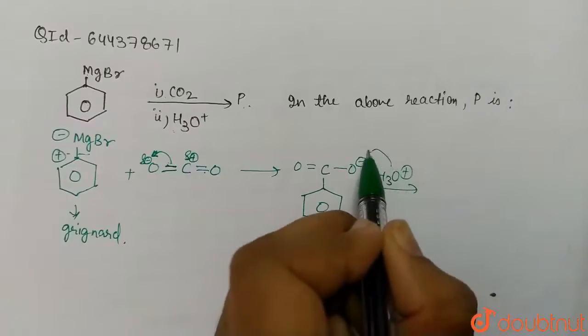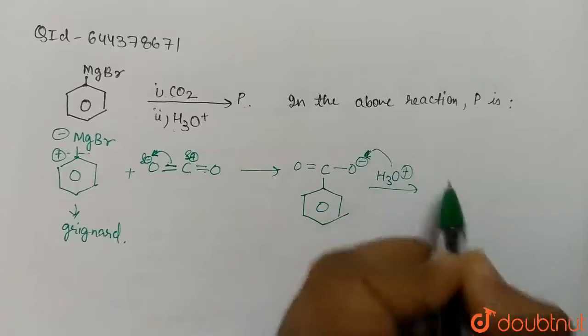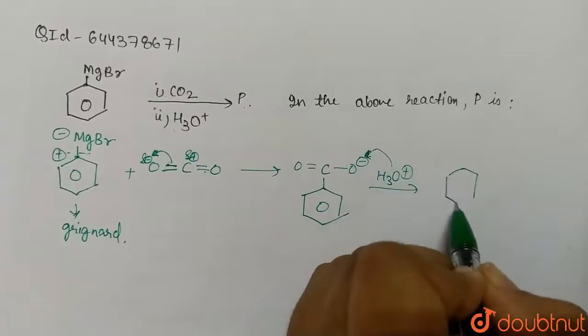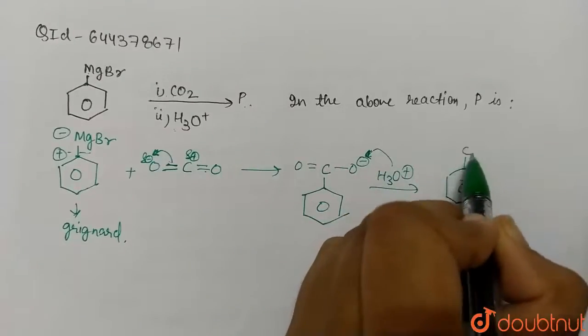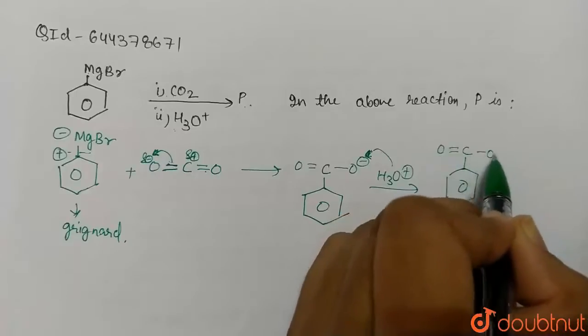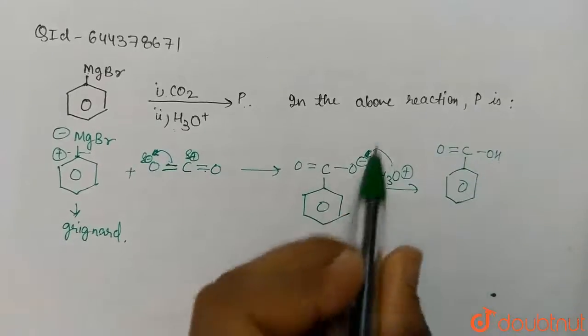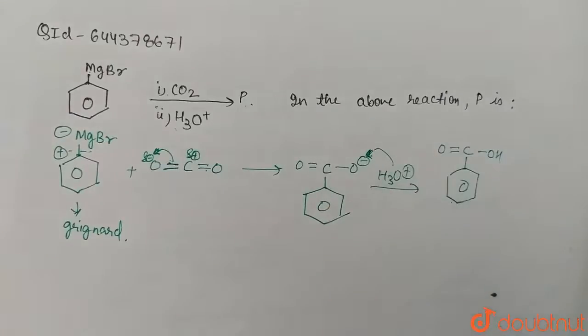Here we get double bond O and OH, which is benzoic acid. So P is benzoic acid. I hope you understood the question. Do practice this question. Thank you.